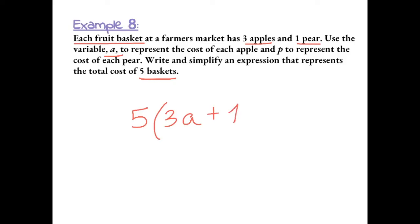Plus 1 pear that costs p dollars each. Then we multiply this by 5 because there's 5 baskets and in each basket there's 3 apples and 1 pear. So because we have two operations, multiplication and addition, the only property that we can use to simplify this is the distributive property. So we have to distribute the 5: 5 times 3a plus 5 times 1p.